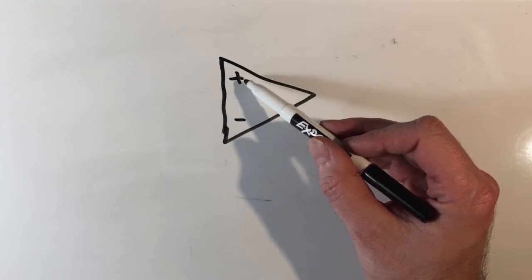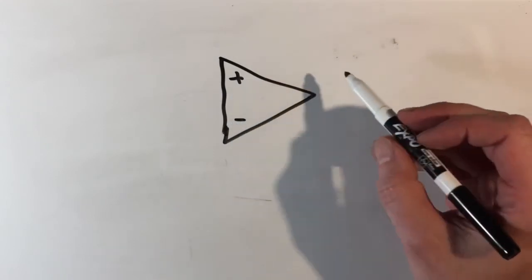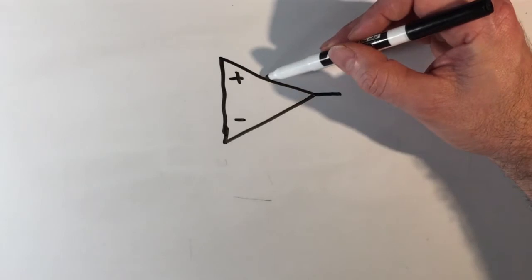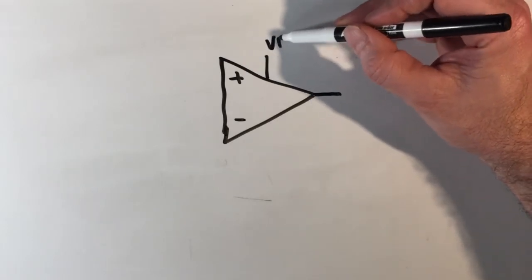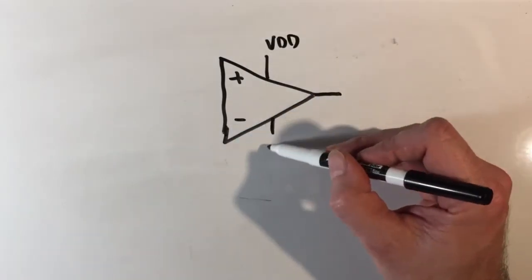We know it has a non-inverting input, an inverting input, and an output terminal. In reality, there's a voltage supply, a positive supply and a negative supply.